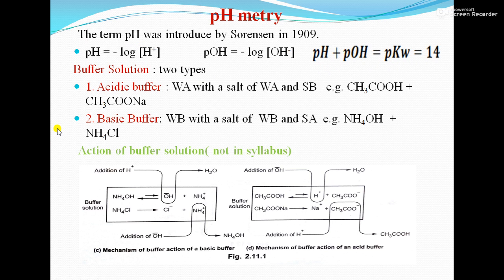There are two types of buffer: acidic buffer and basic buffer. An acidic buffer is prepared by mixing a weak acid with the salt of a weak acid and a strong base — for example, acetic acid (weak acid) with sodium acetate (salt of weak acid and strong base NaOH). A basic buffer uses a weak base with the salt of a weak base and strong acid — for example, NH₄OH (weak base) and HCl (strong acid).